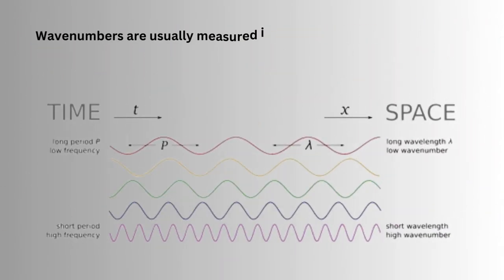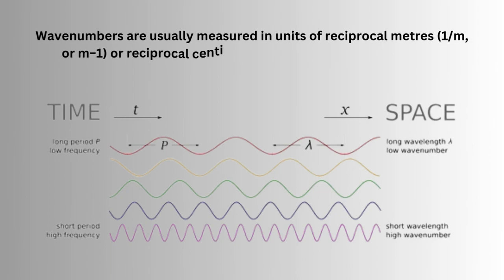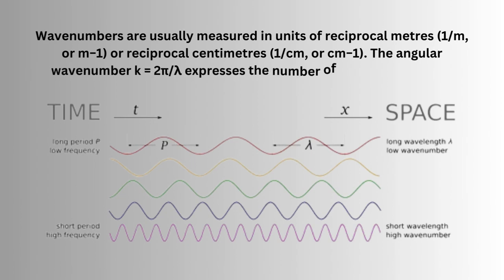What is wave number? Wave numbers are usually measured in units of reciprocal meters (1/m or m^-1) or reciprocal centimeters (cm^-1). The angular wave number k = 2π/λ expresses the number of radians in a unit of distance.